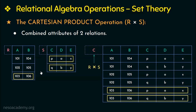If relation R is of degree P and relation S is of degree N, then the resulting relation will be of degree P plus N. In this example, R is of degree 2 and S is of degree 3, so the degree of R cross S is 2 plus 3, which is 5. The cardinality of R is 3 (three tuples) and the cardinality of S is 2 (two tuples), so the cardinality of R cross S is 3 times 2, which equals 6 tuples.